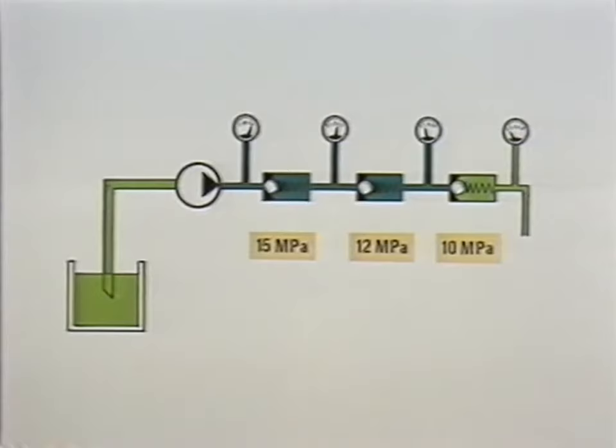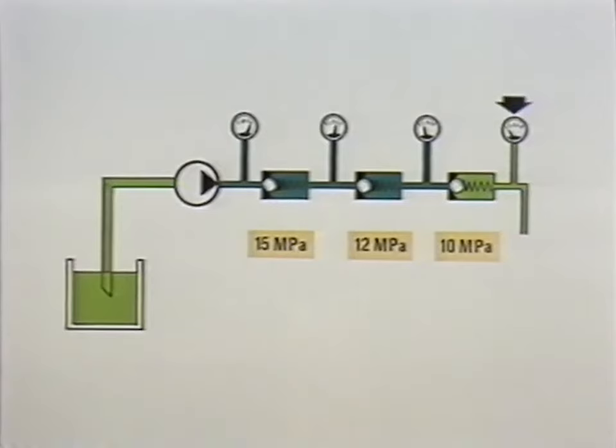Now study the pressure gauges from right to left. The gauge furthest to the right shows the atmospheric pressure. In other words, the pressure of the air we normally breathe.